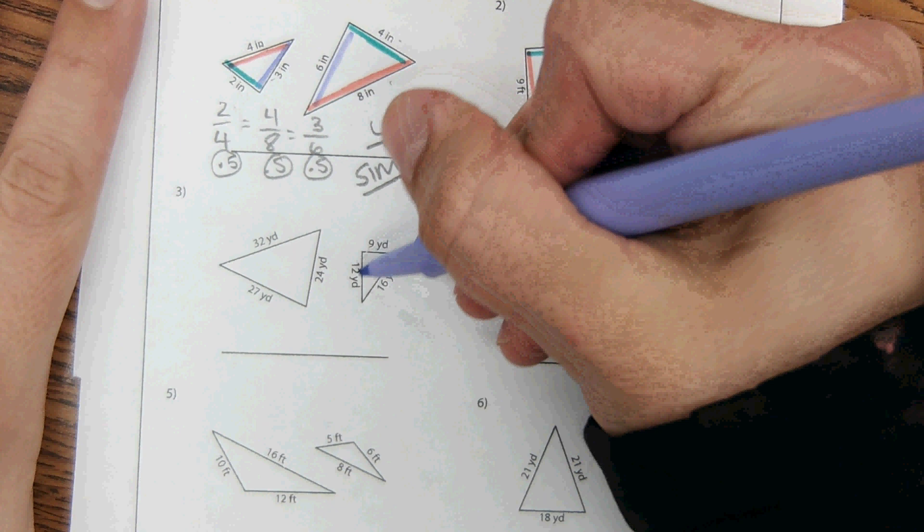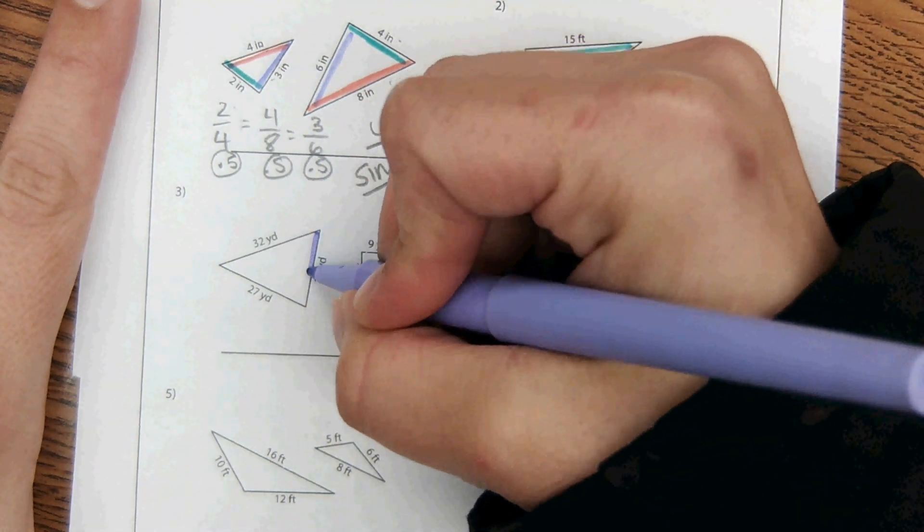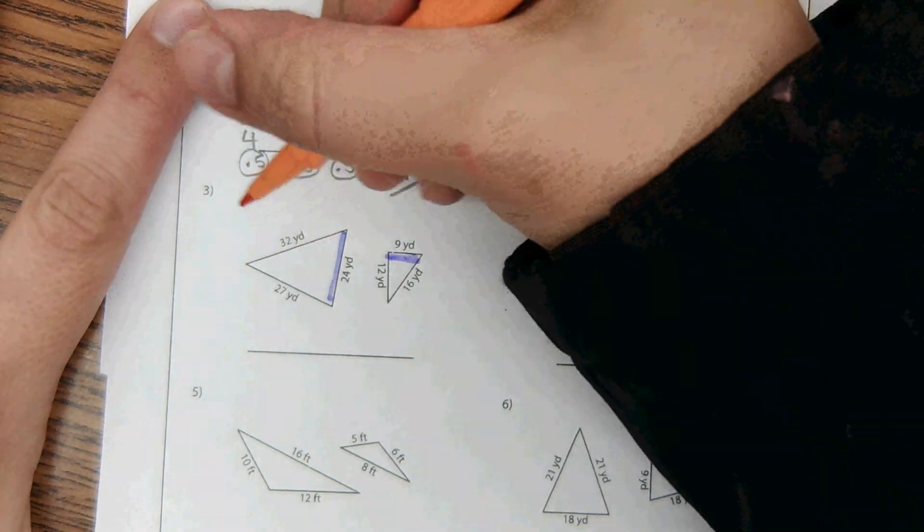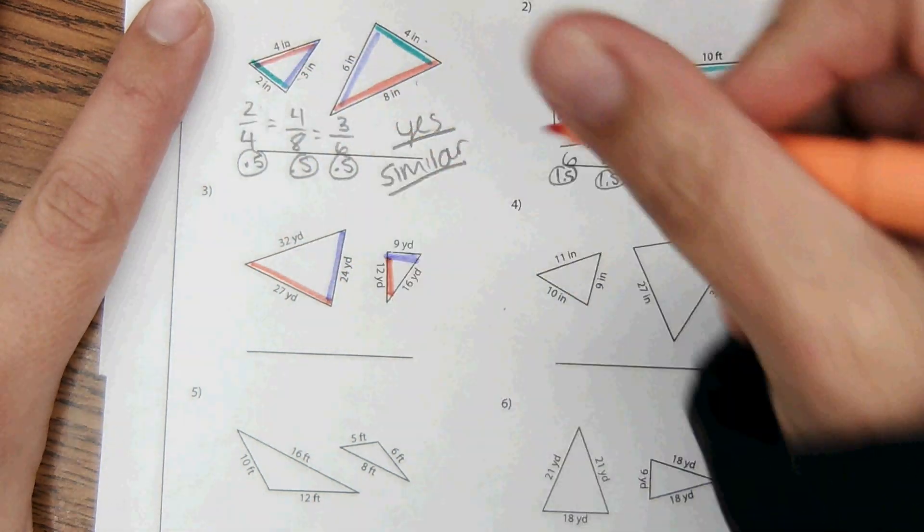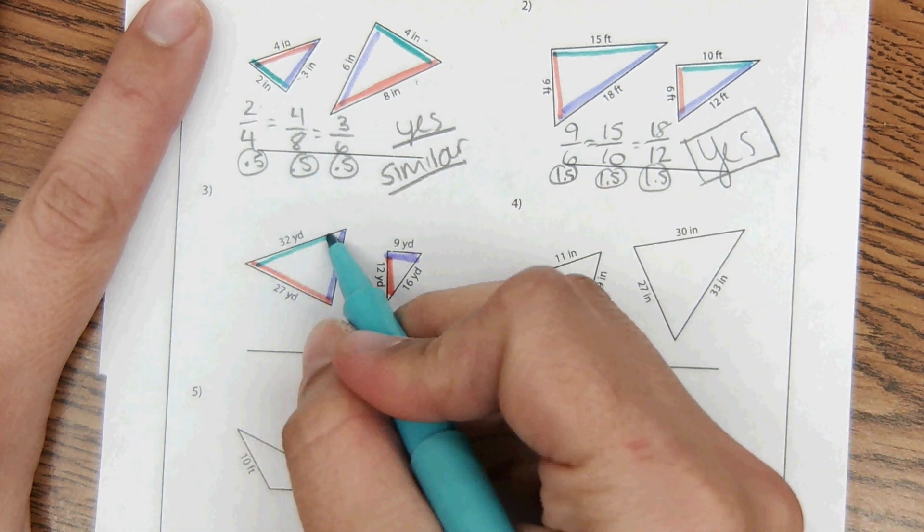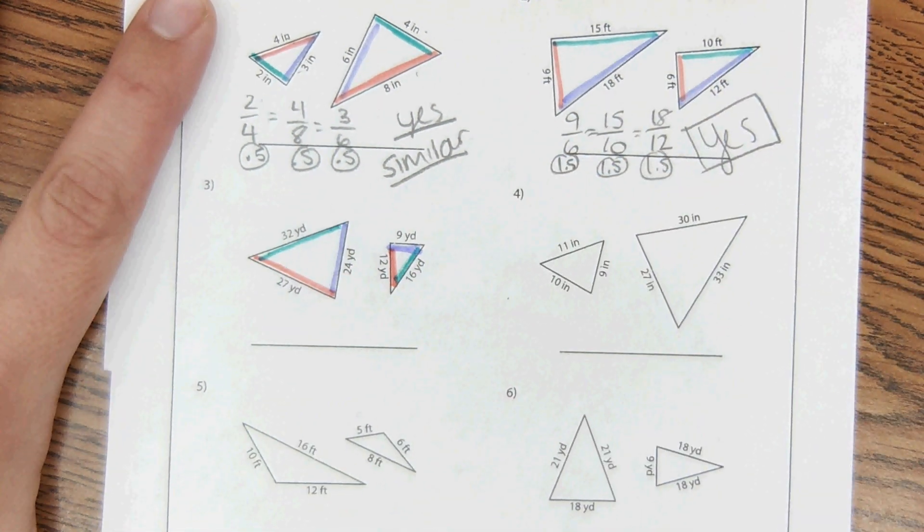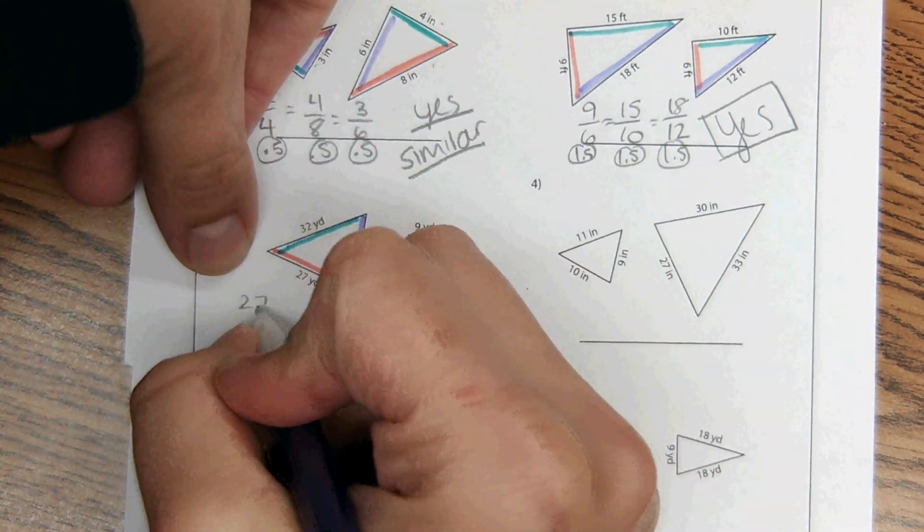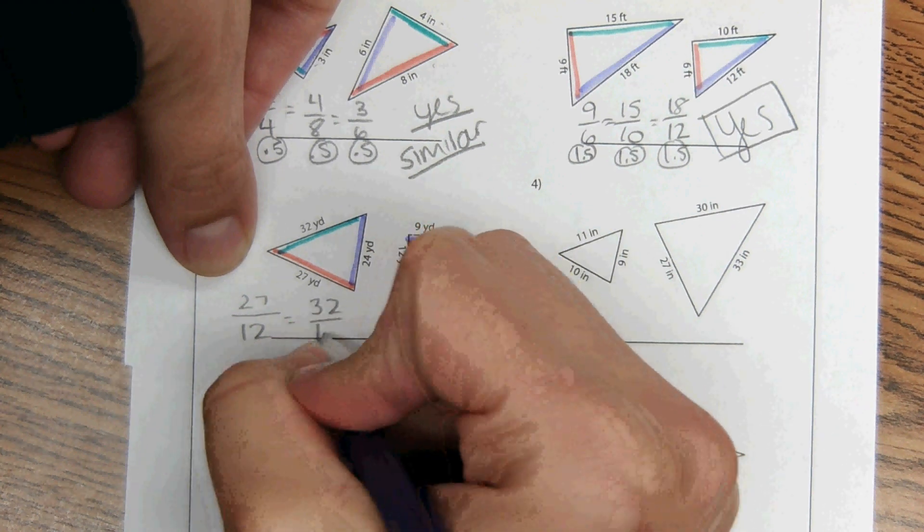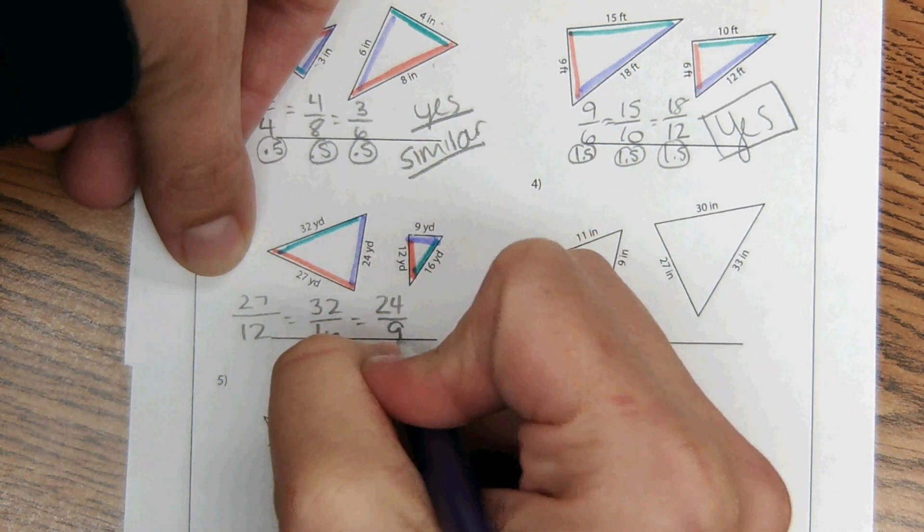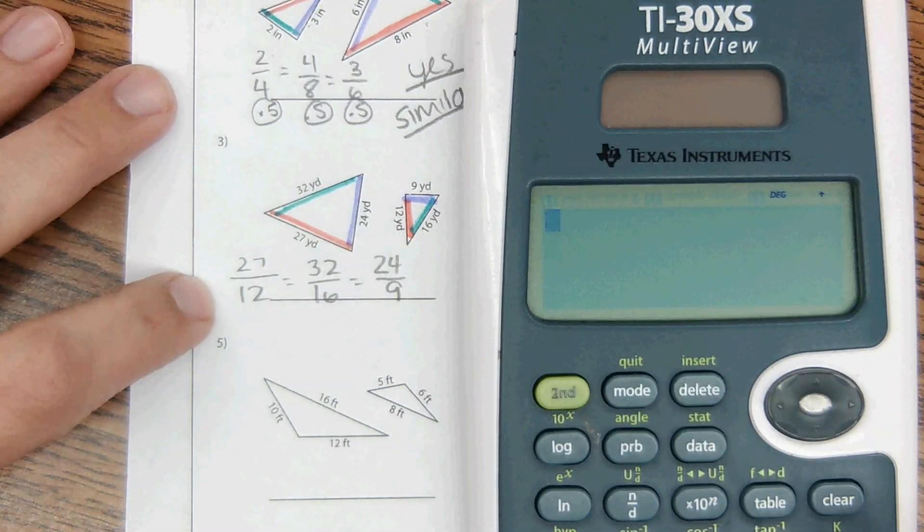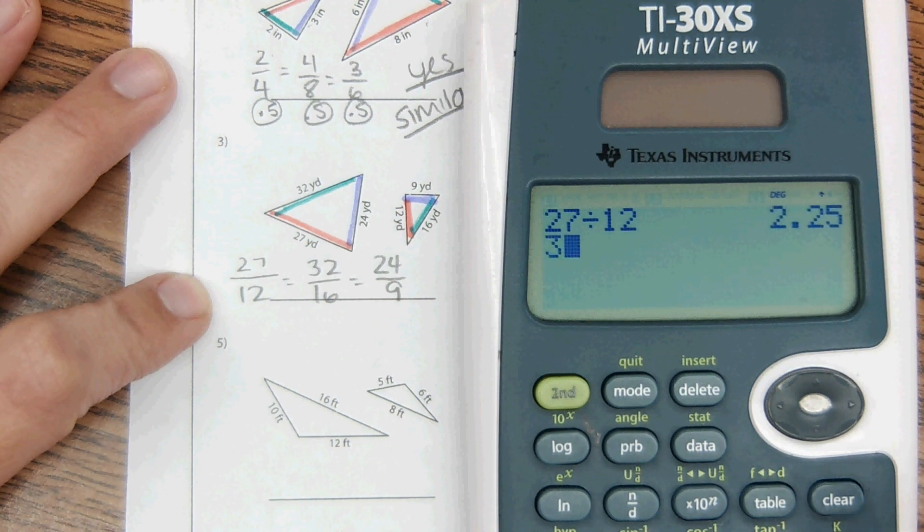The next one, same thing. Just identifying corresponding parts. Sometimes it's hard to tell, but I'm just doing, like, shortest side in this triangle to shortest side in this triangle. And then, medium length, medium length. And then, you try it. Maybe you want to work in your head. I'm doing orange over orange, teal over teal, and purple over purple.